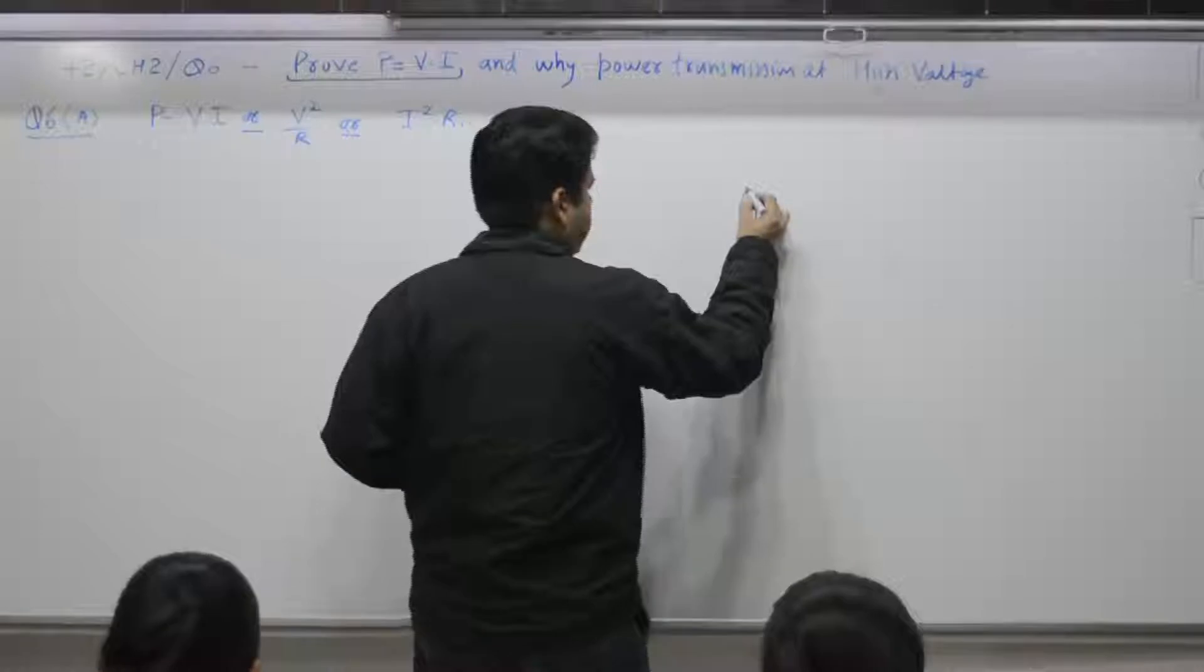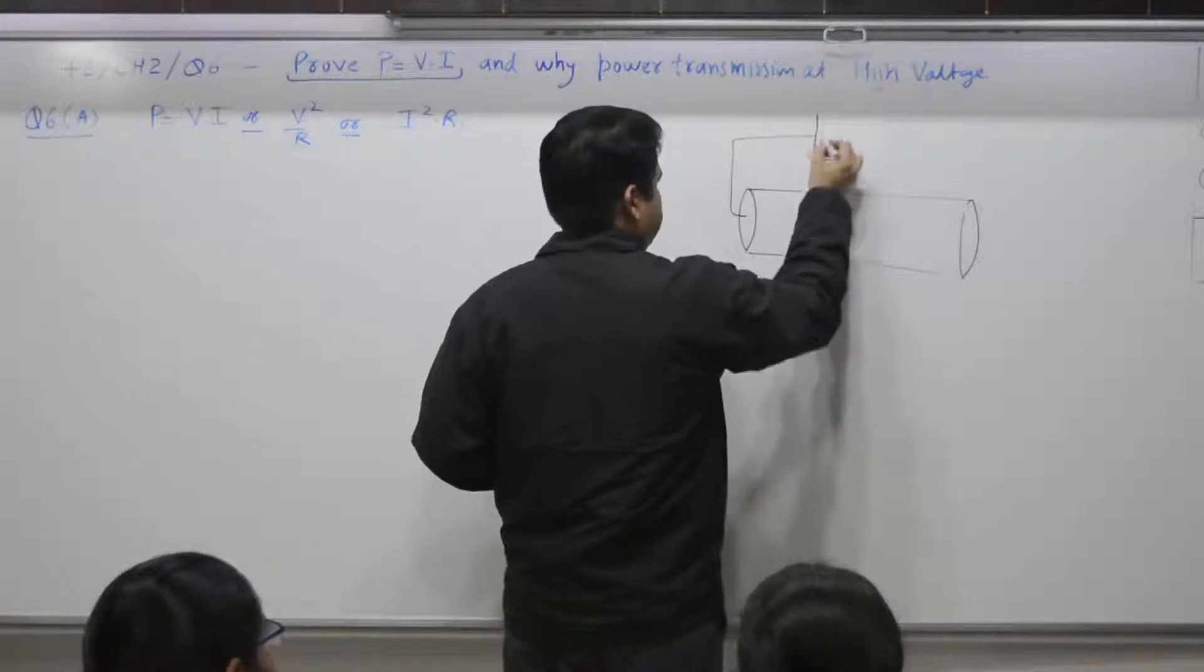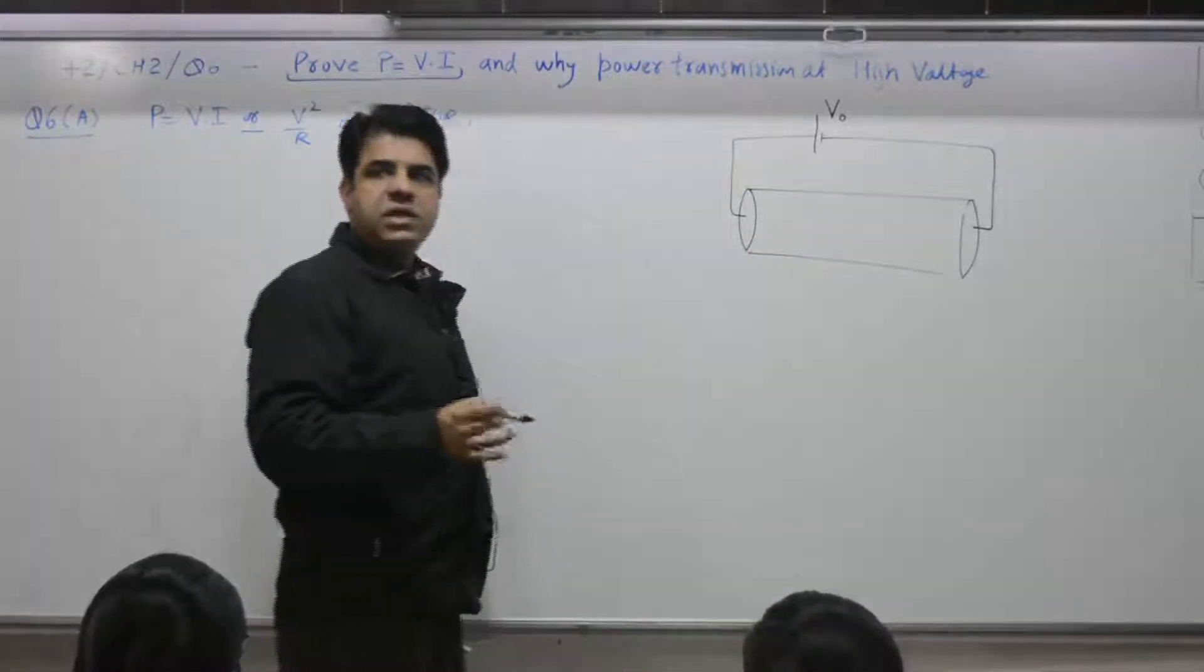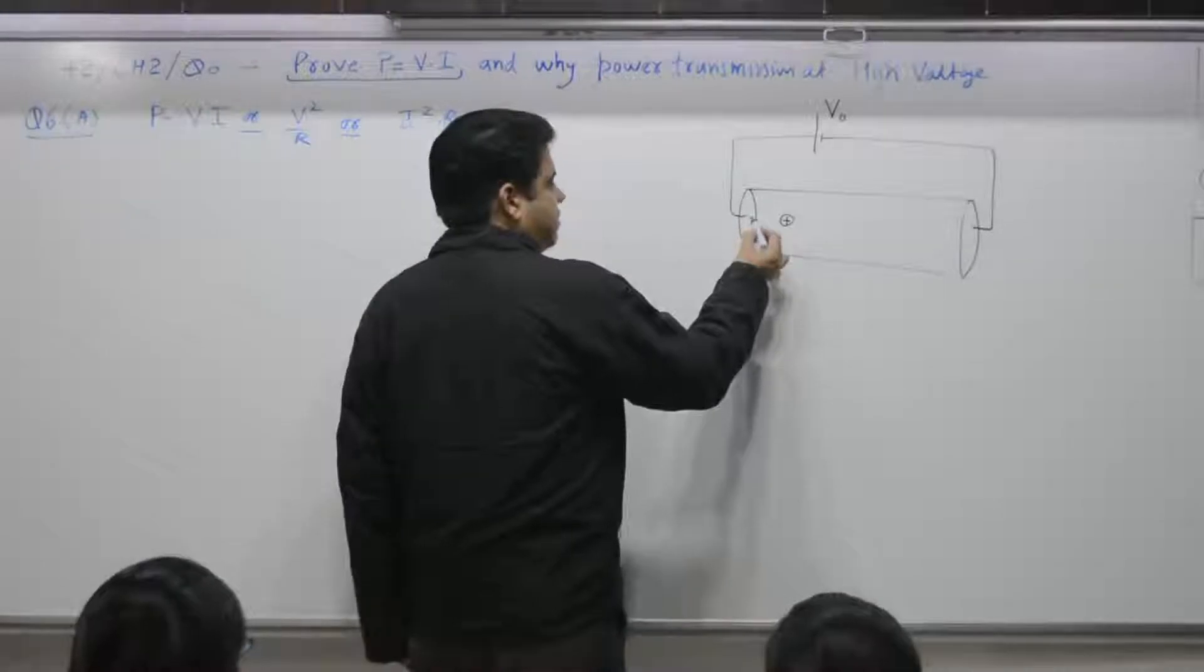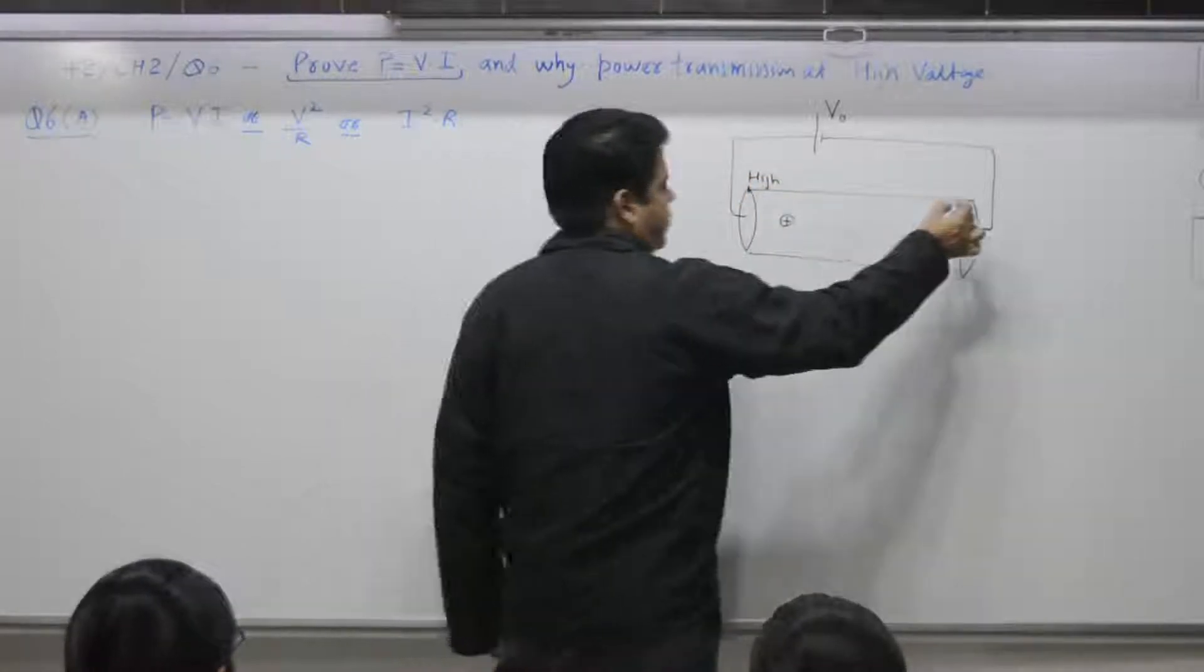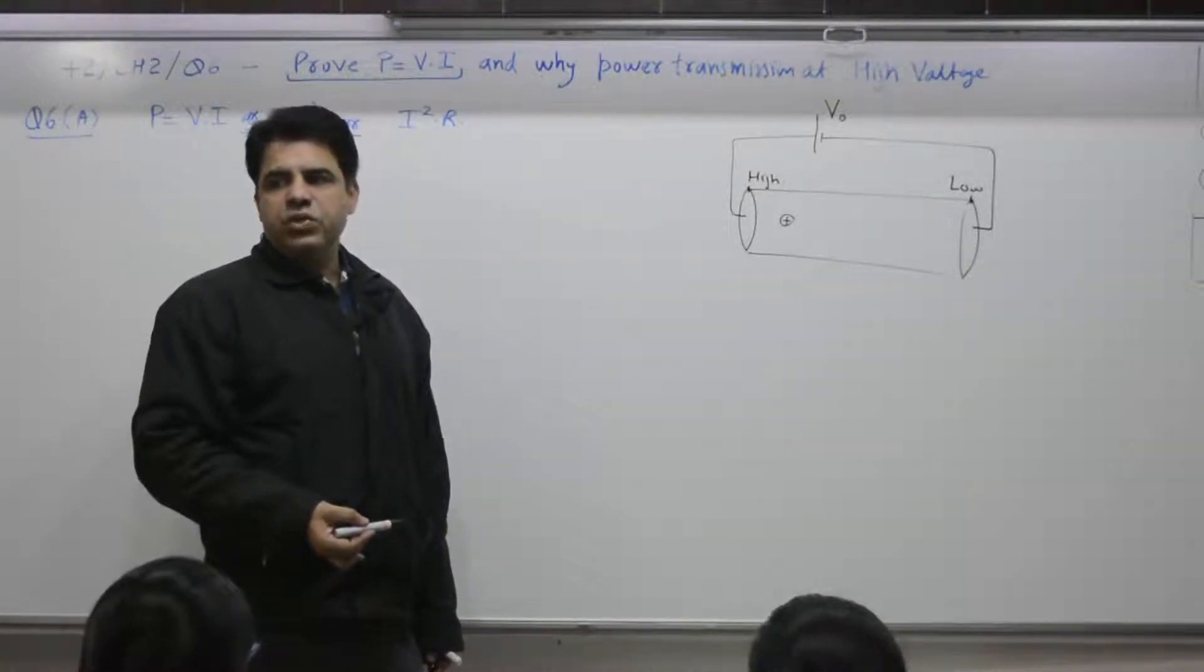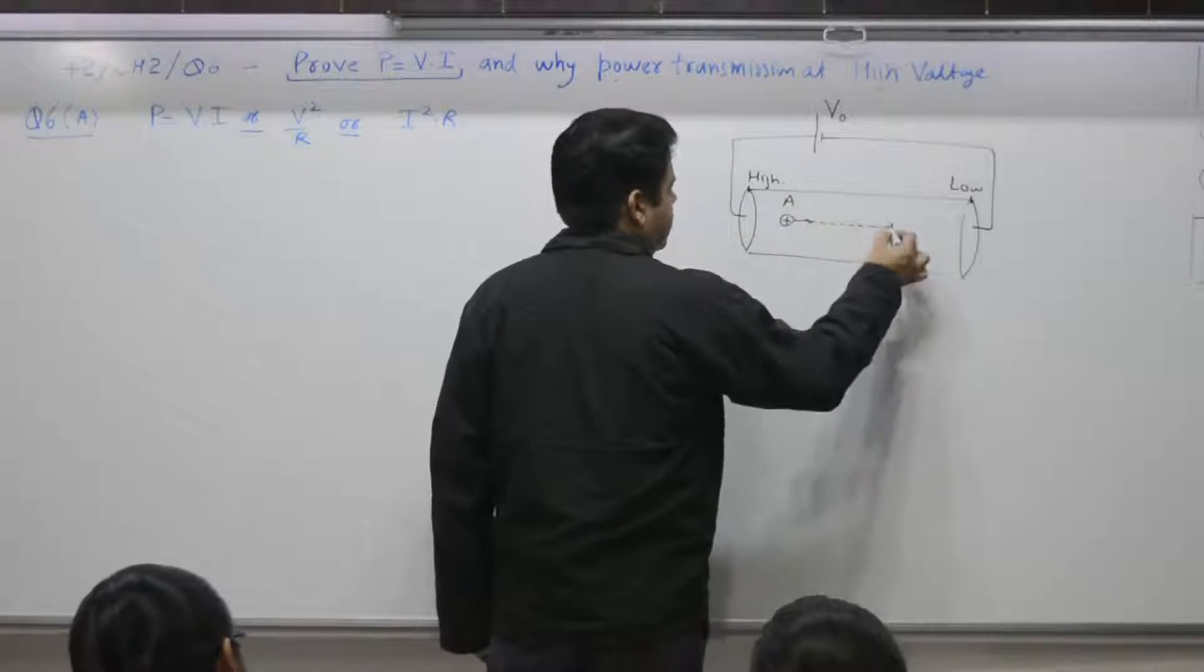A wire. We connect a battery across the same. Say the potential difference is V naught. Suppose no doubt in a wire it is electrons which flow but we can mark this as a positive. Positive charge will move from this point is at a high potential. The other point is at a low potential because it is connected with a negative term of the battery. Positive charge flows from high potential to low potential. So this charge will move from say A to B.